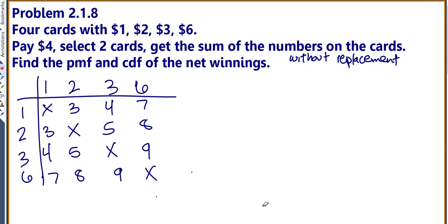So this helps me find my sample space. My possible values are 3, 4, 5, 7, 8, and 9. Now let's come over here and write down what my possible sums are. So my possible sums are 3, 4, 5, 7, 8, and 9.